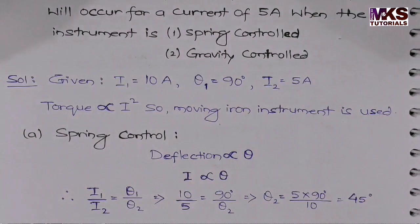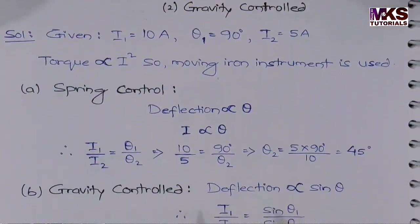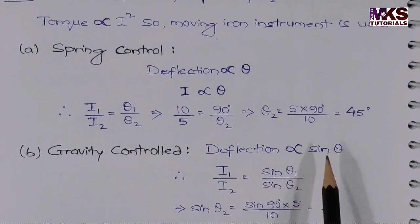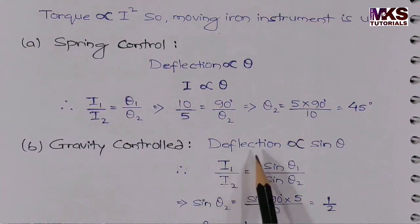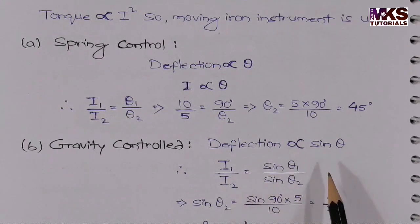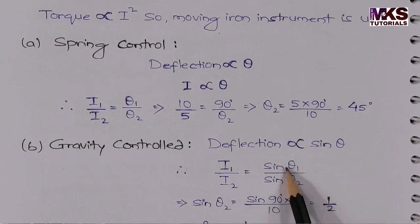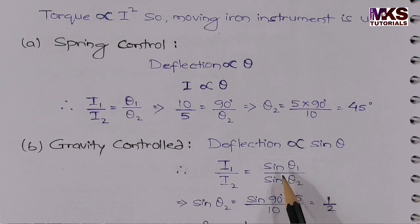For gravity control, deflection is directly proportional to sine of theta. So the relation becomes: I₁²/I₂² equals sin θ₁ / sin θ₂.